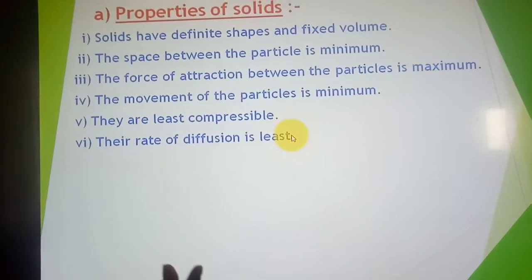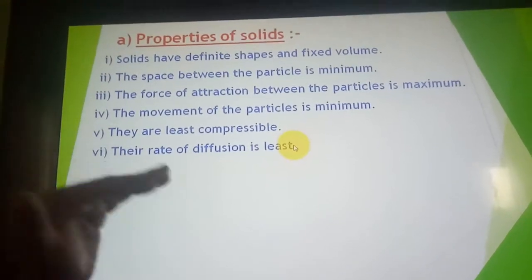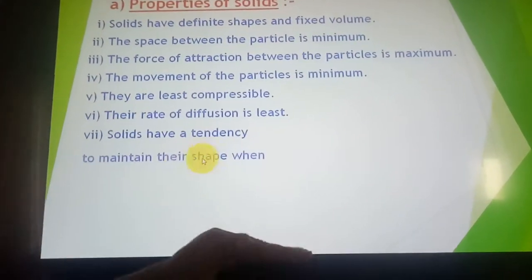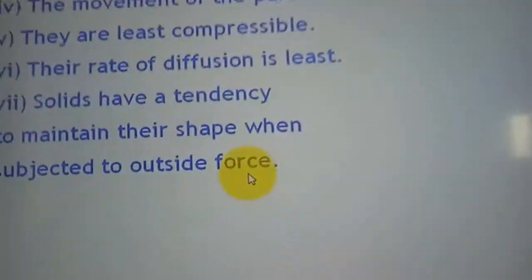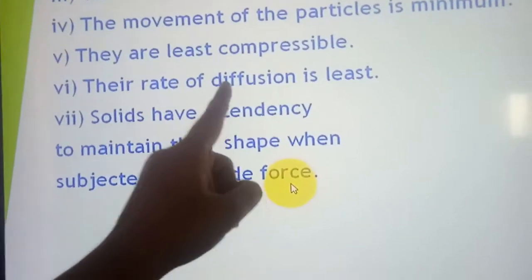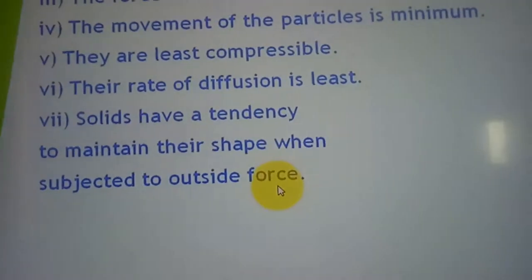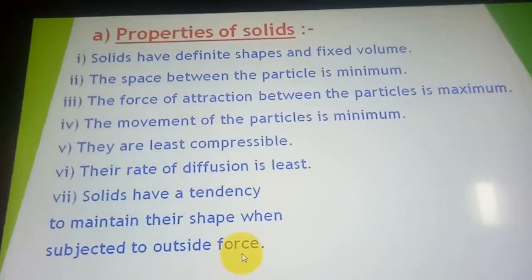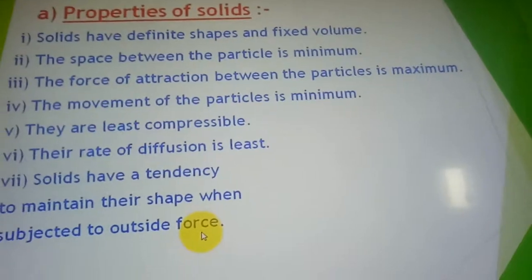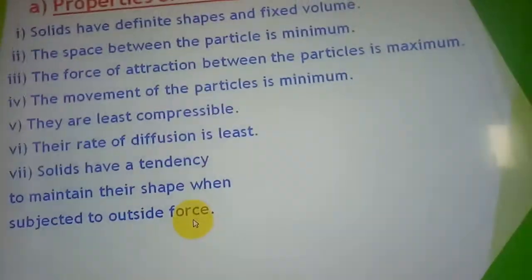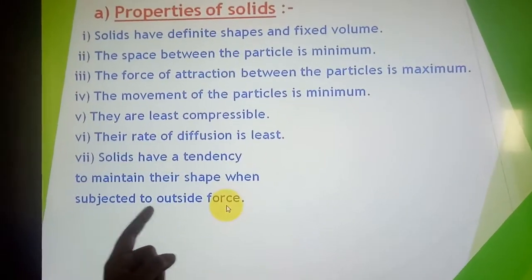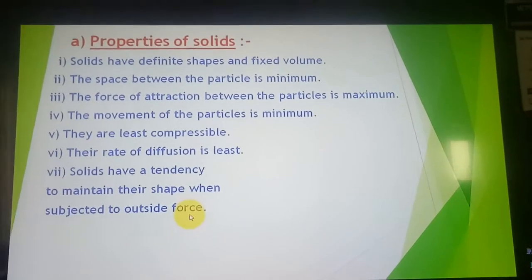Solids are the least compressible. The rate of diffusion is also least — if you take two wooden blocks and press them together, they will not diffuse into each other. Similarly, a wooden block and a metal block pressed together will not diffuse. Solids have a tendency to maintain their shape when subjected to an outside force — that is rigidity.